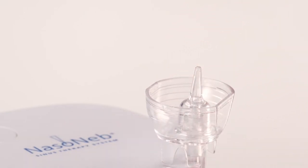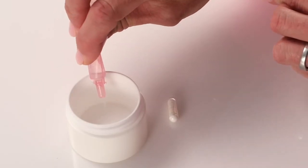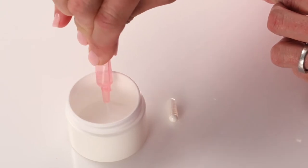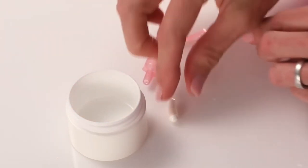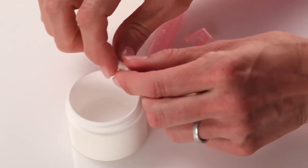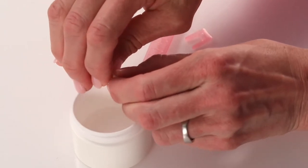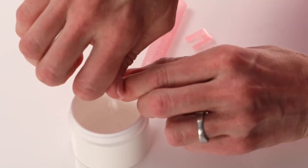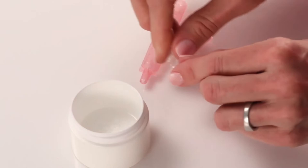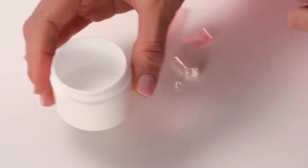If you have been provided with powder medication and saline, empty one dose of saline into the mixing container provided by your pharmacist or a clean measuring cup. Pull open the capsule and empty the contents into the saline. Swirl the mixture until it is uniform.